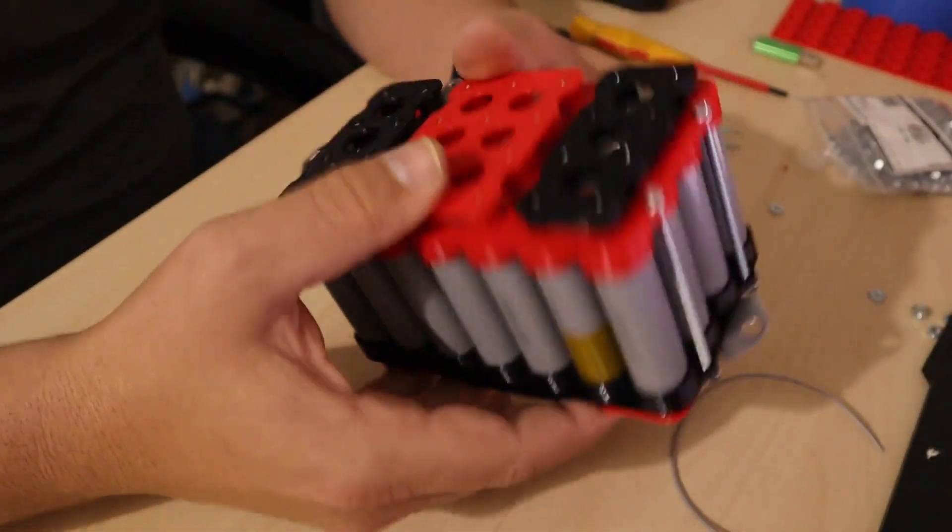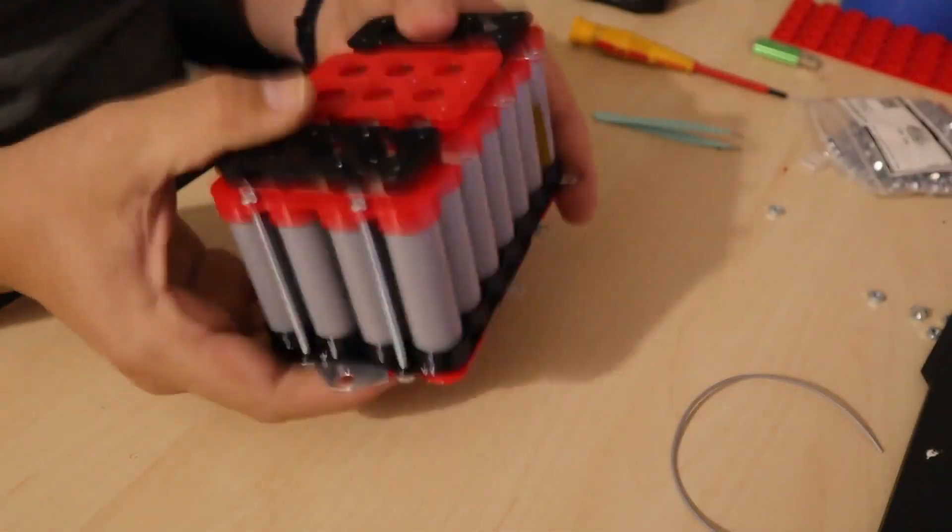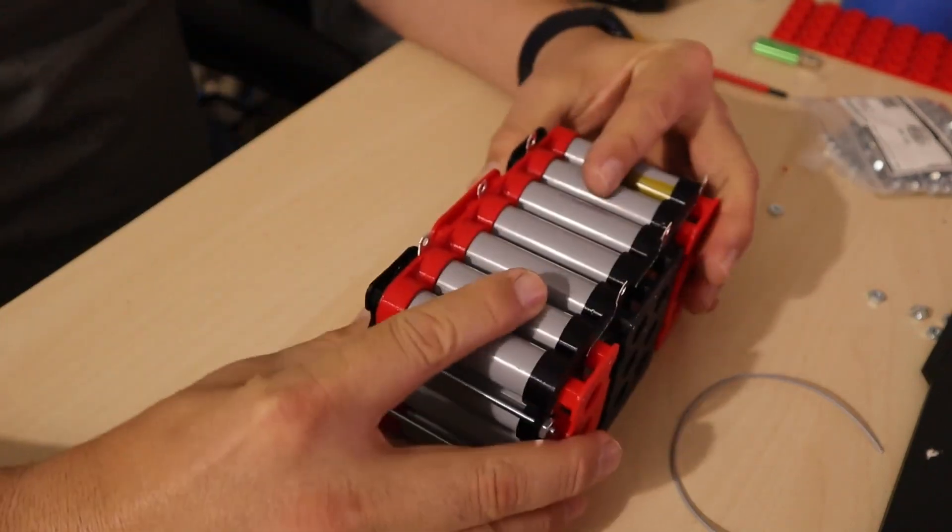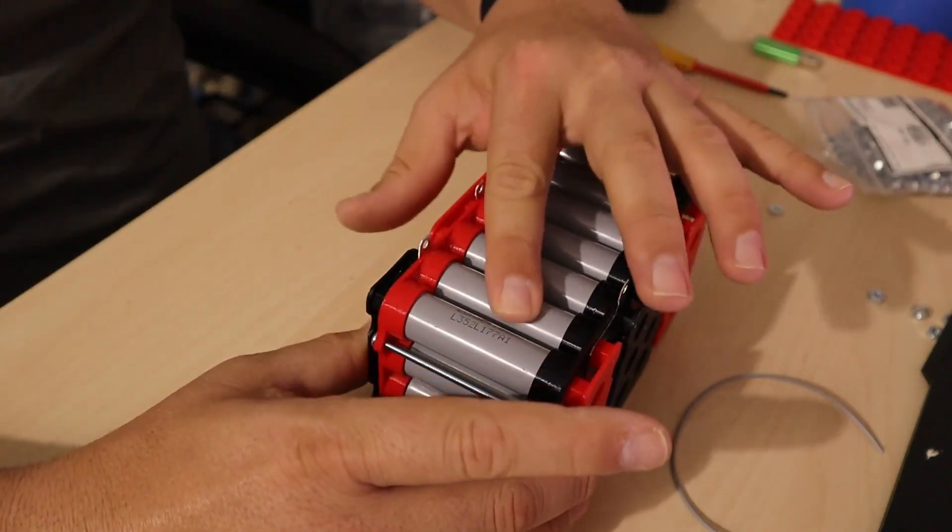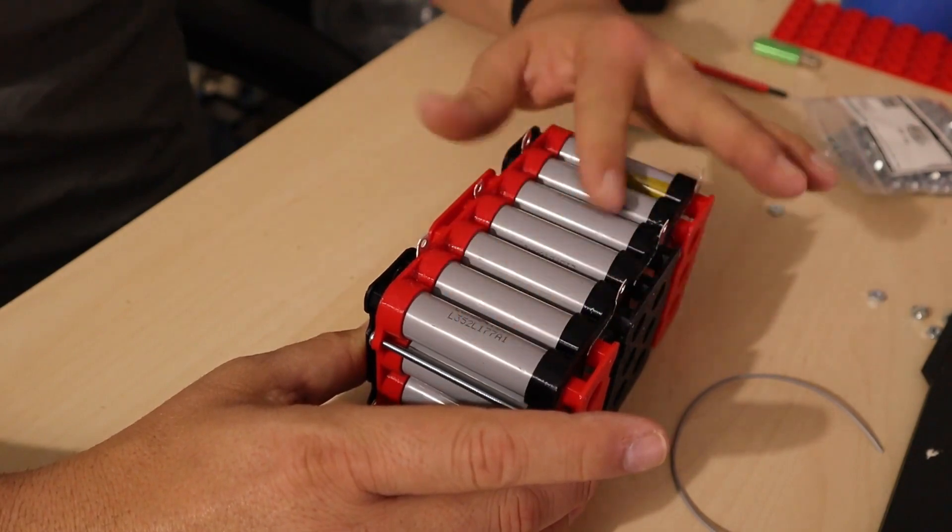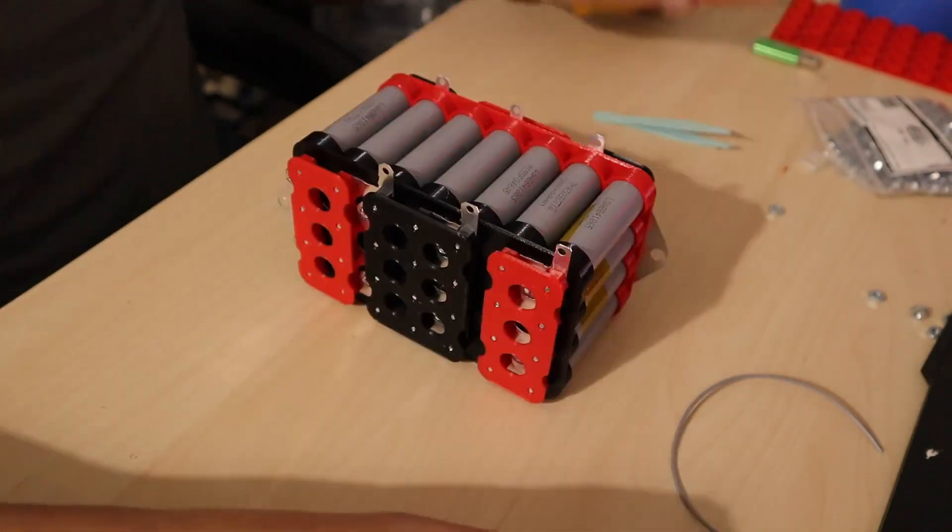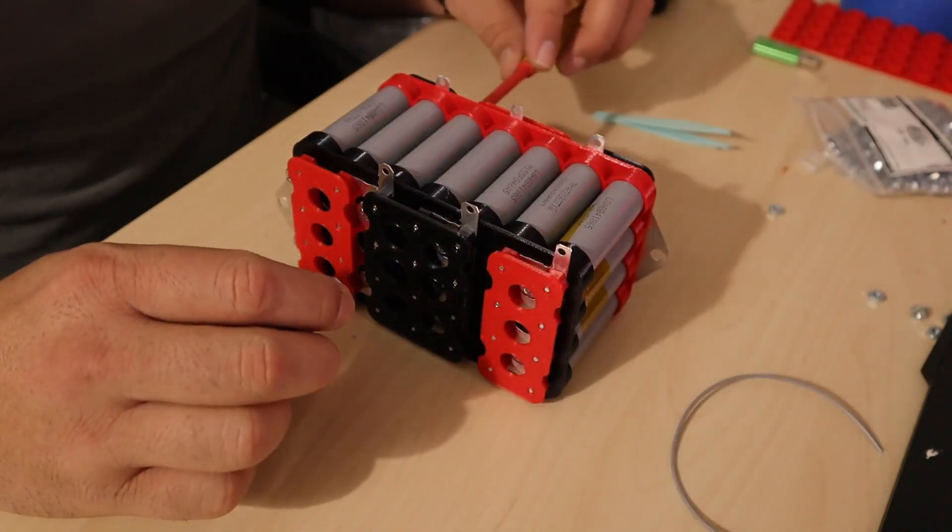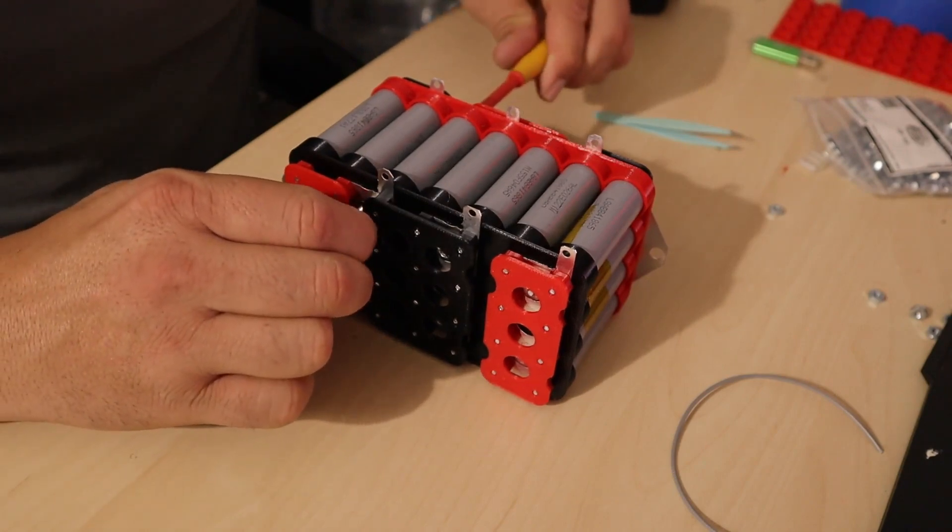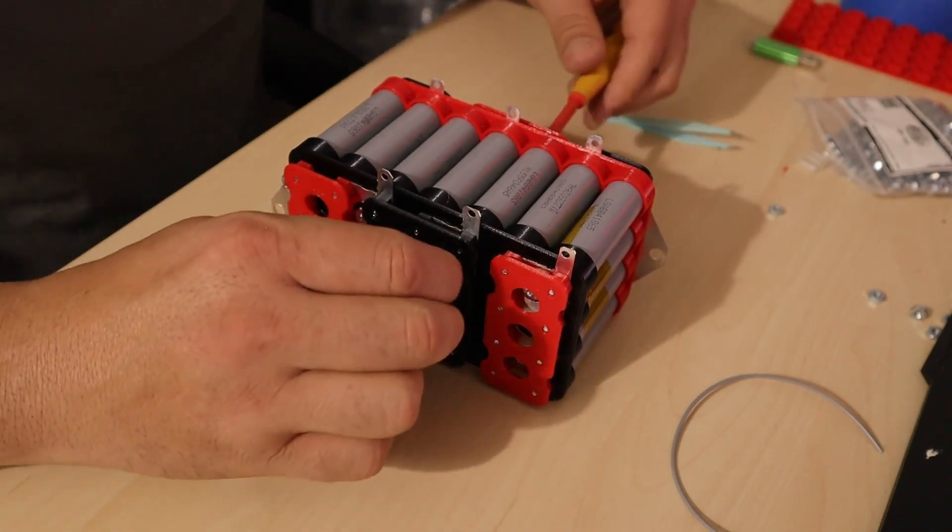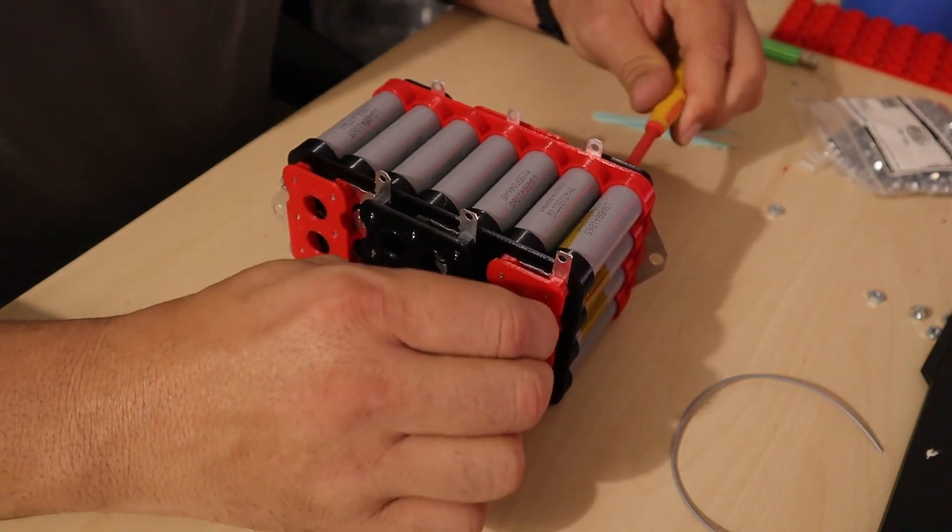Once you're done, you can take the whole pack and just shake it a little bit and see if there's nothing making a weird sound. If it does, it means that there's something loose. If you can move a battery with your finger, it means that it's not super tight. Just go around the whole battery and give it a final adjustment. Make sure everything's strong but not too strong.